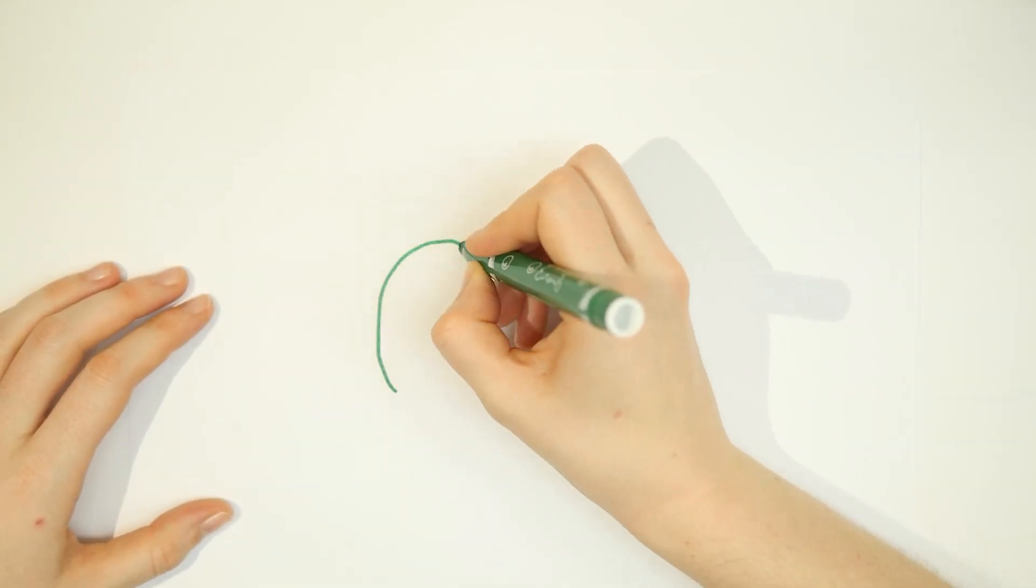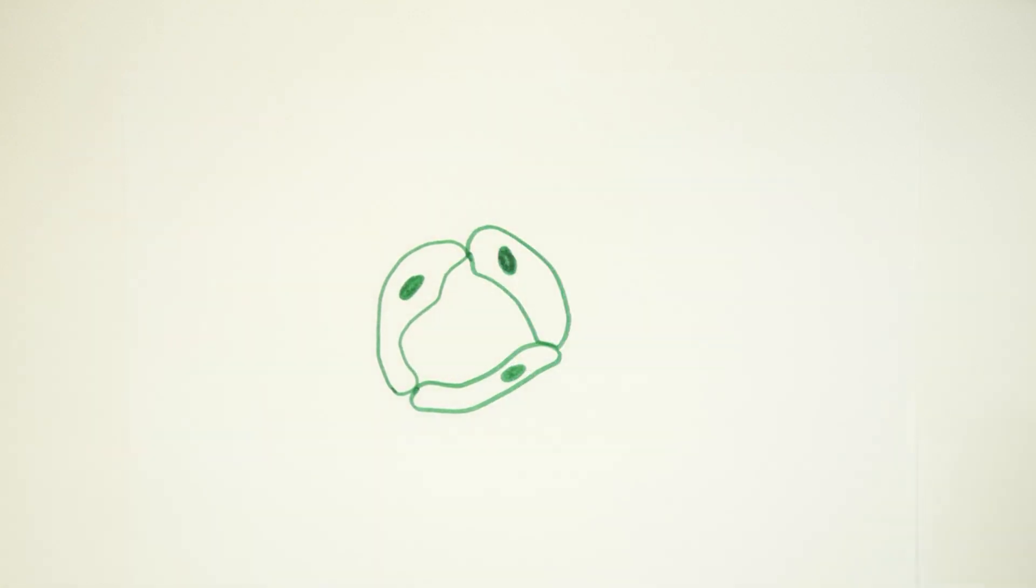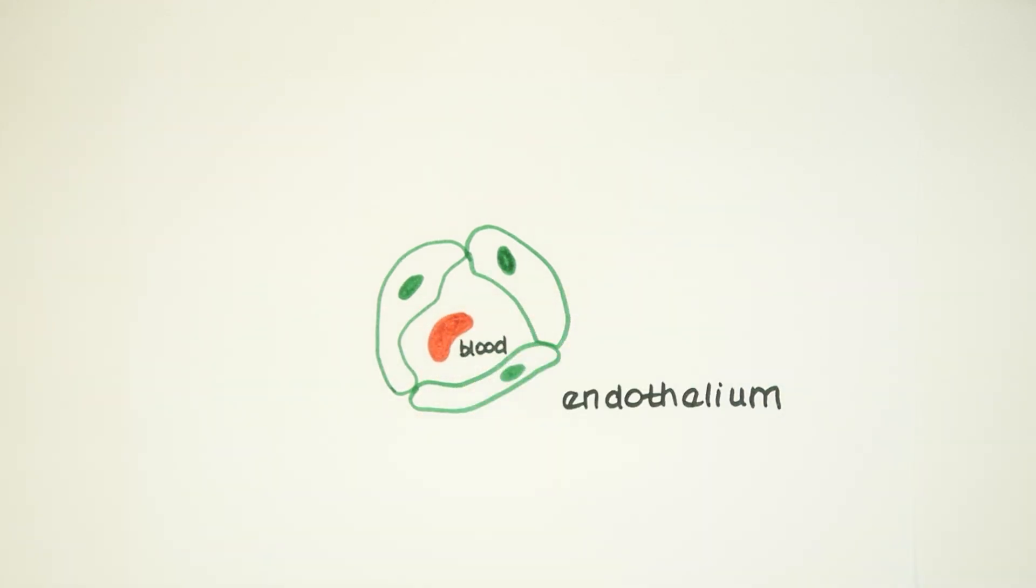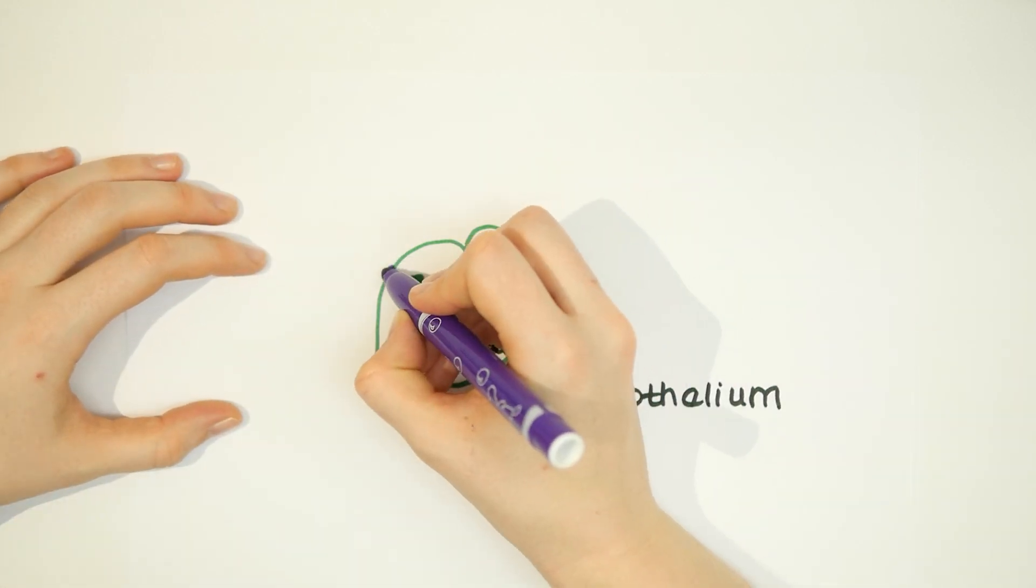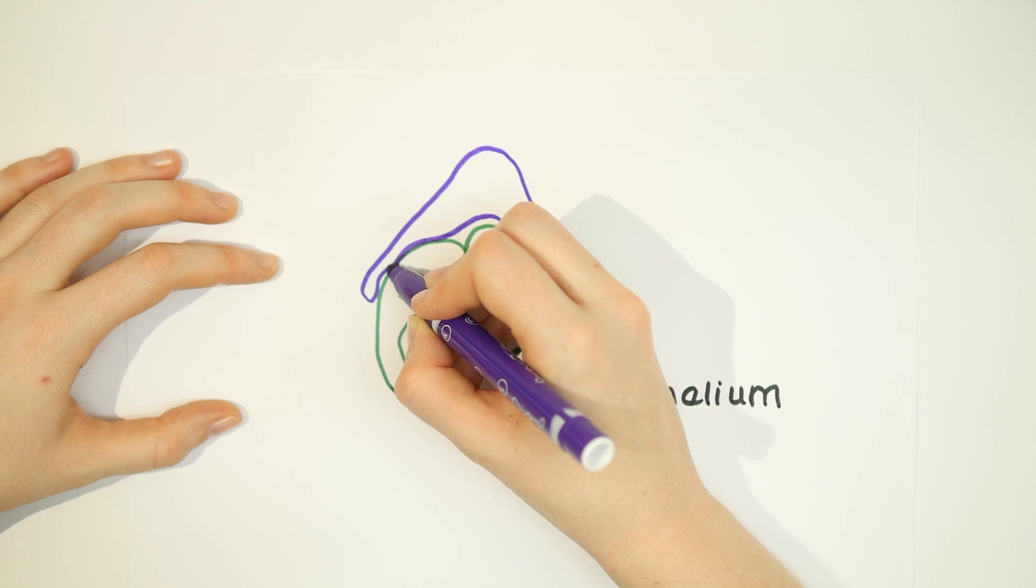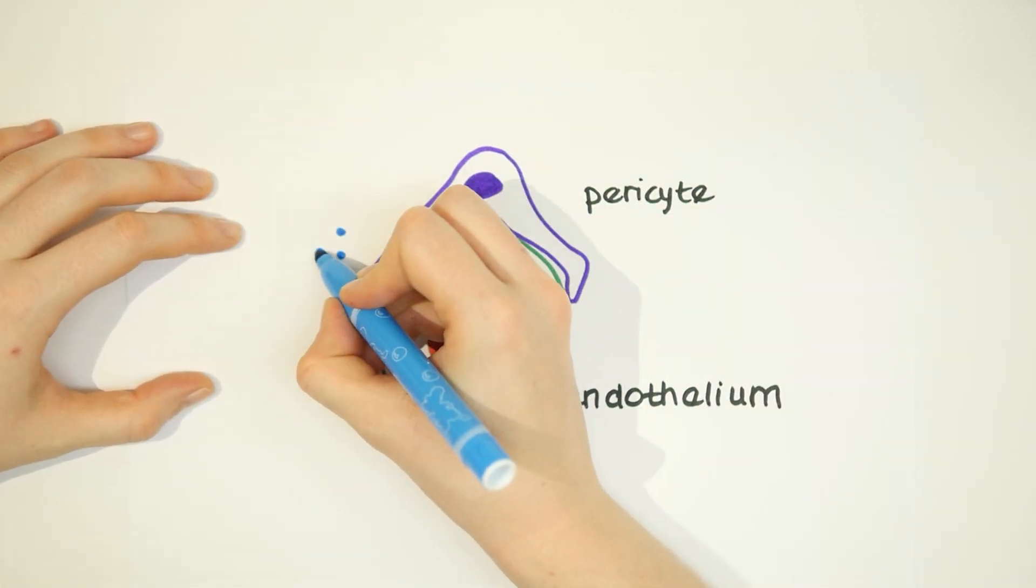If you imagine a blood vessel as a kind of tube, the inner layer of cells, called endothelium, keeps the blood cells inside the lumen and prevents clots from forming. On the outer side, endothelial cells of our smallest blood vessels, the capillaries, are supported by tiny muscle-like cells, so-called pericytes, that stabilize the vessel wall.